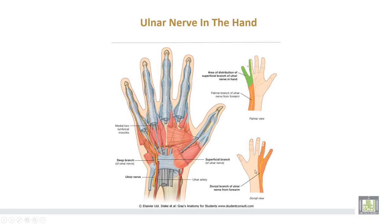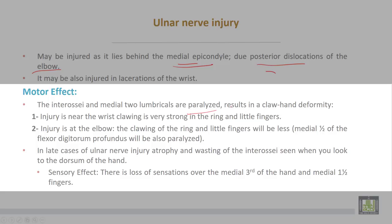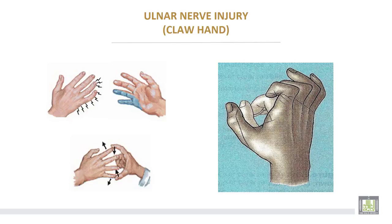Ulnar nerve injury may occur as it lies behind the medial epicondyle of the humerus due to posterior dislocation of the elbow joint, or from laceration at the wrist. Motor effect: the interossei and medial two lumbricals are paralyzed, resulting in claw hand deformity. Injury near the wrist causes very strong clawing in the ring and little fingers. Injury at the elbow results in less clawing of the ring and little fingers, and the medial half of flexor digitorum profundus is also paralyzed. In late cases, atrophy and wasting of the interossei occur. Sensory effect: loss of sensation over the medial third of the hand and medial one-and-a-half fingers.